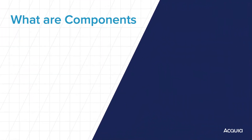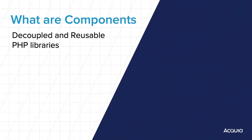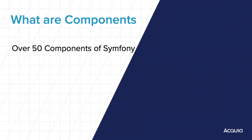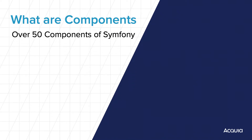Symfony components are sets of decoupled and reusable PHP libraries. They are battle-tested in thousands of projects and have been downloaded billions of times. In practical terms, Symfony components have become the standard foundation on which the best PHP applications are built. Each Symfony component has its own Git repository and they are the result of many years of work through the contributions of many developers. As of today, there are roughly over 50 Symfony components and Drupal uses around 15 of them.